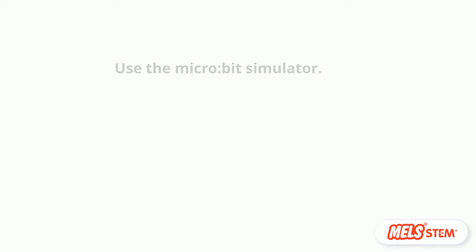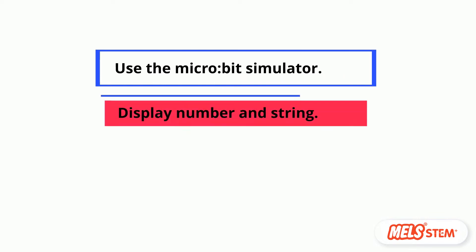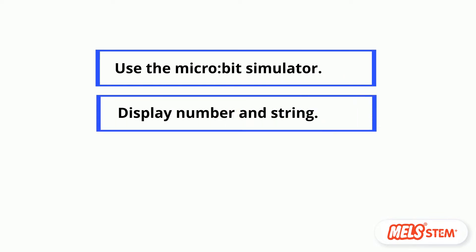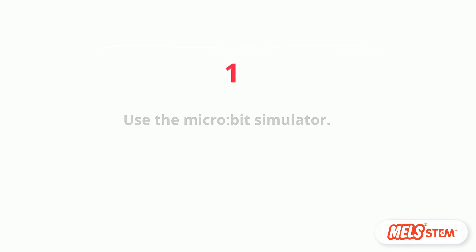There are three parts in this lesson: Microbit simulator, show numbers and string, and save and upload your classwork. Let's begin.